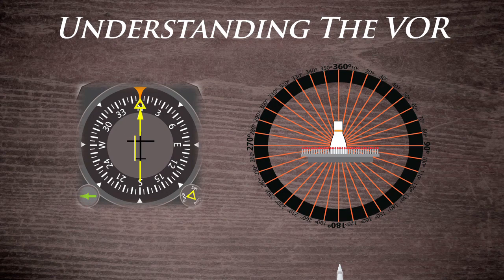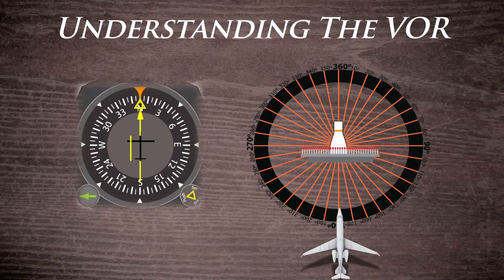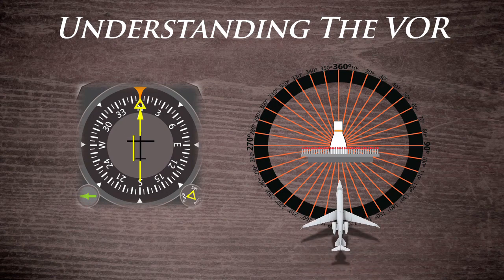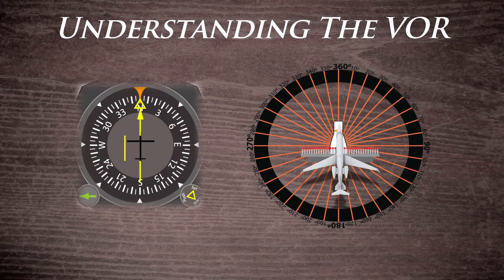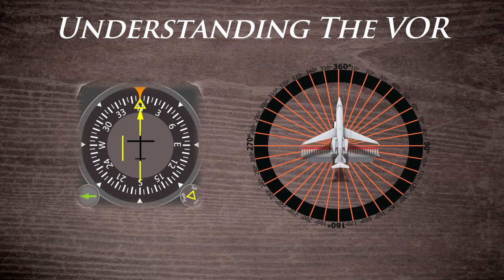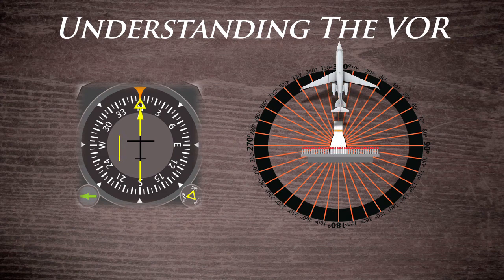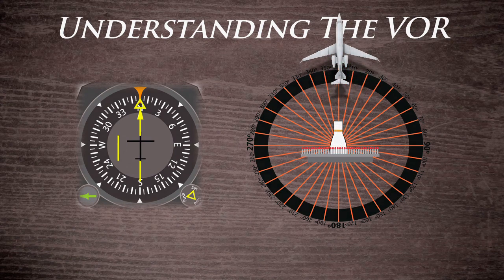Eventually you will enter the cone of confusion once near a VOR. This will be apparent once the CDI needle begins to dance back and forth, followed by full deflection once over the VOR.